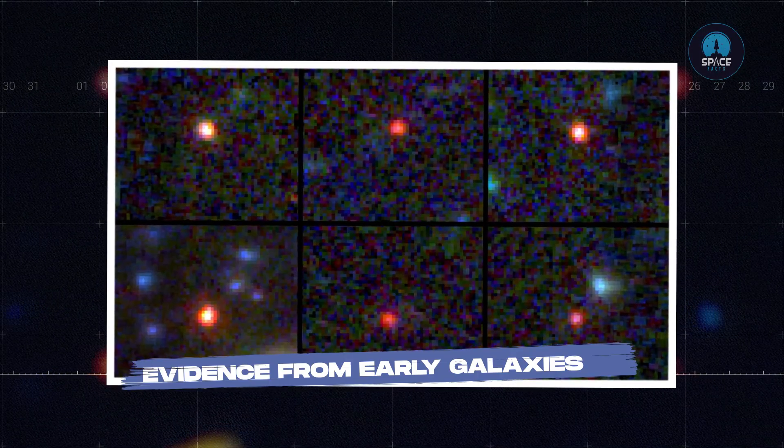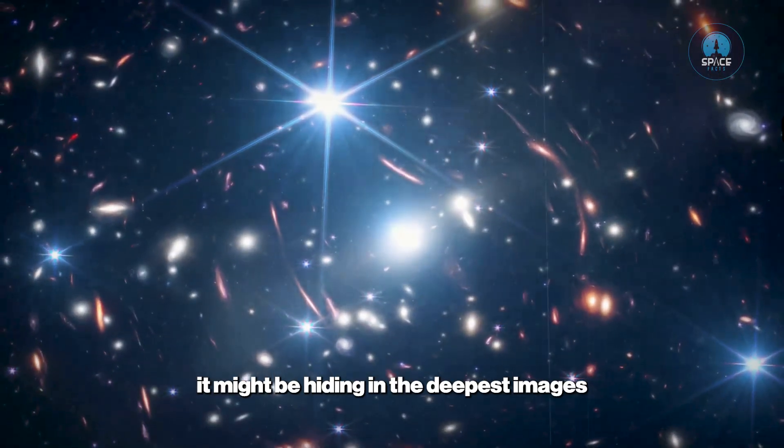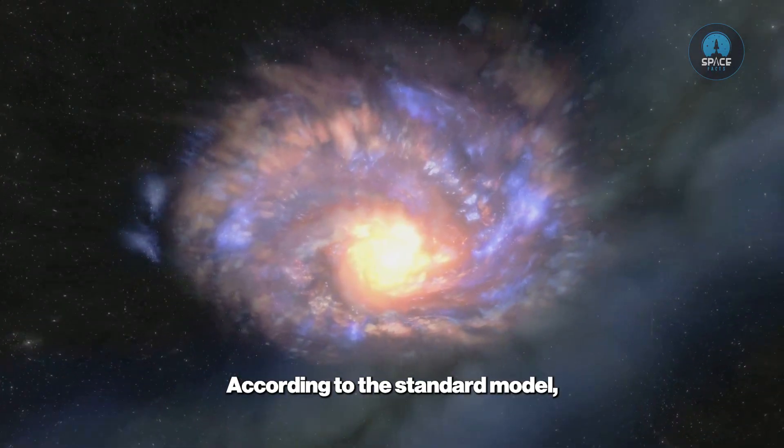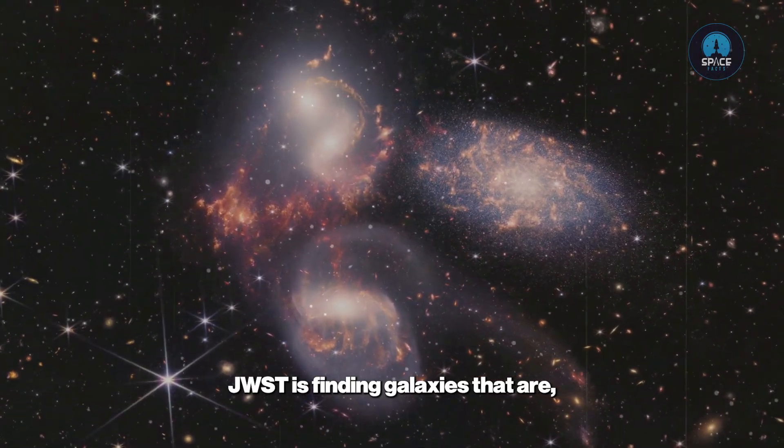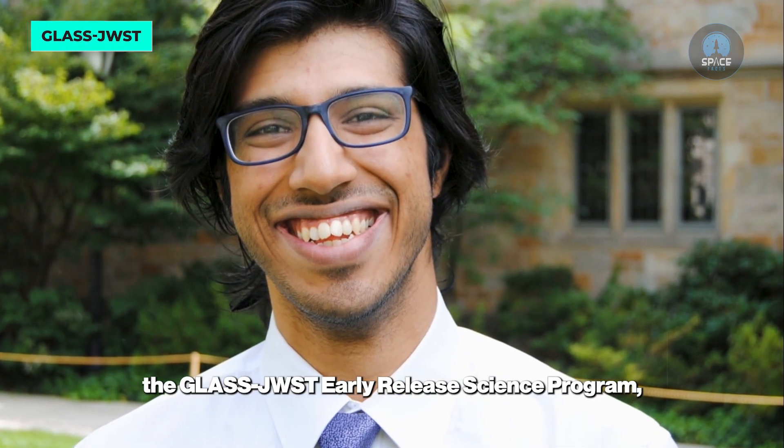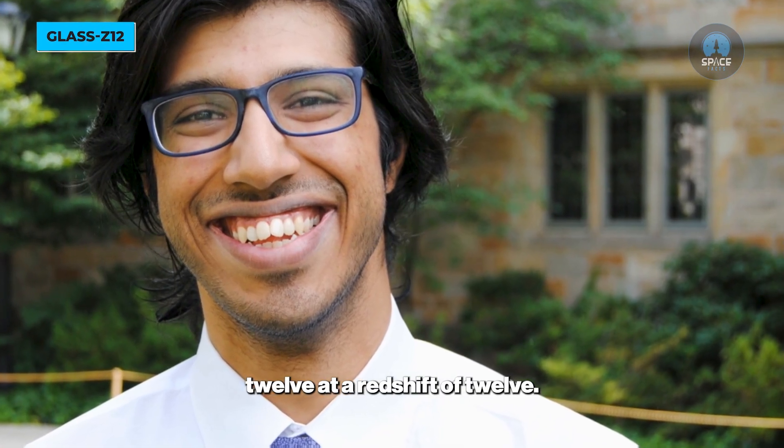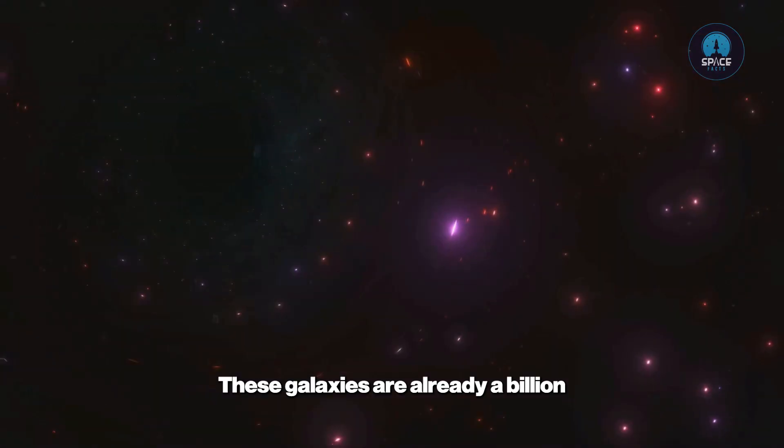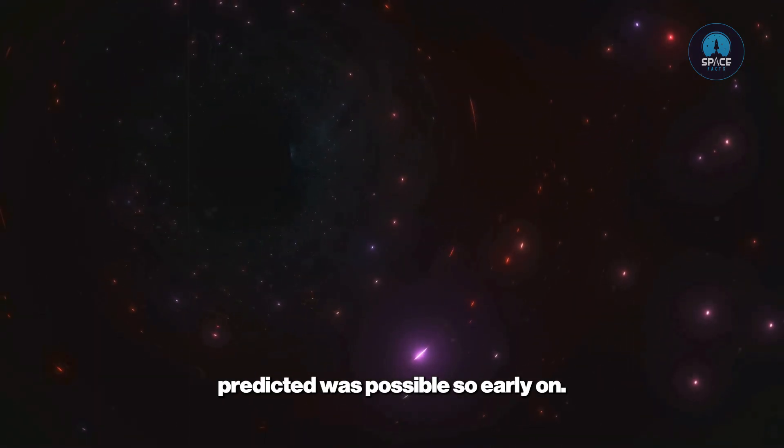Evidence from early galaxies: This might all sound like fascinating speculation, but where's the evidence? Well, it might be hiding in the deepest images of our universe captured by the James Webb Space Telescope. According to the standard model, galaxies should build up gradually over time, but JWST is finding galaxies that are honestly bafflingly massive and mature. For example, the GLASS JADES Early Release Science Program, which includes astronomers like Rohan Naidu, has identified galaxies such as GLASS-z12 at a redshift of 12. That means we're seeing them as they were just 350 million years after the Big Bang. These galaxies are already a billion times the mass of our Sun, which is way larger than our models predicted was possible so early on.